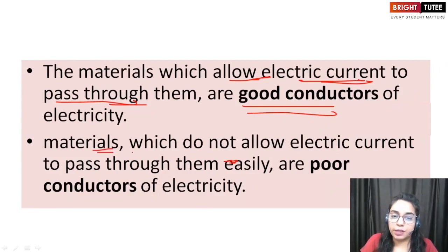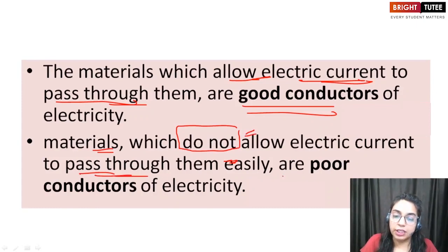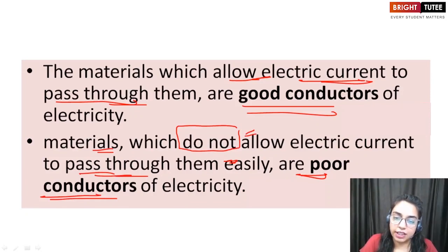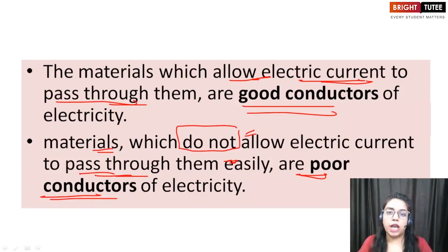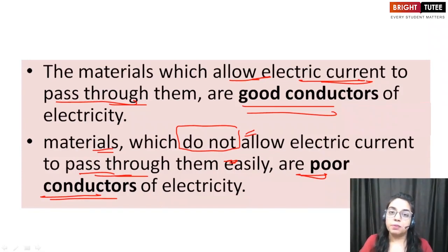Then we have those materials which do not allow electric current to pass through them. Such materials are known as poor conductors, or we also call them insulators. This is the basic thing we need to know before starting any chapter dealing with electric current or electricity. So keep in mind what conductors are and what insulators are.